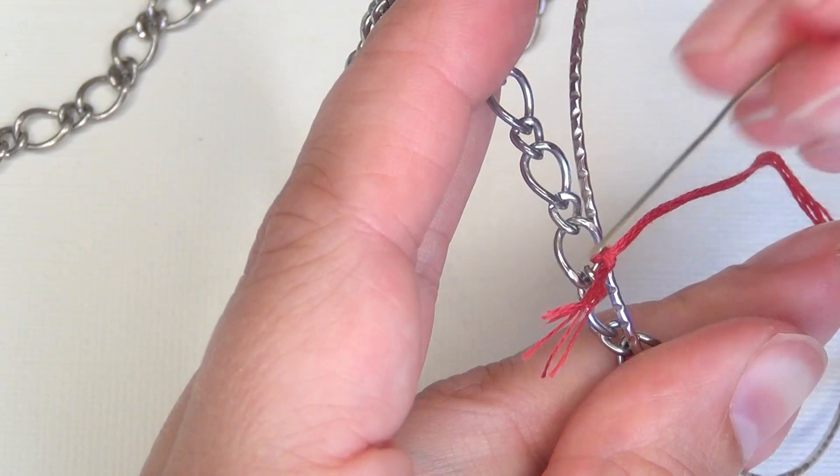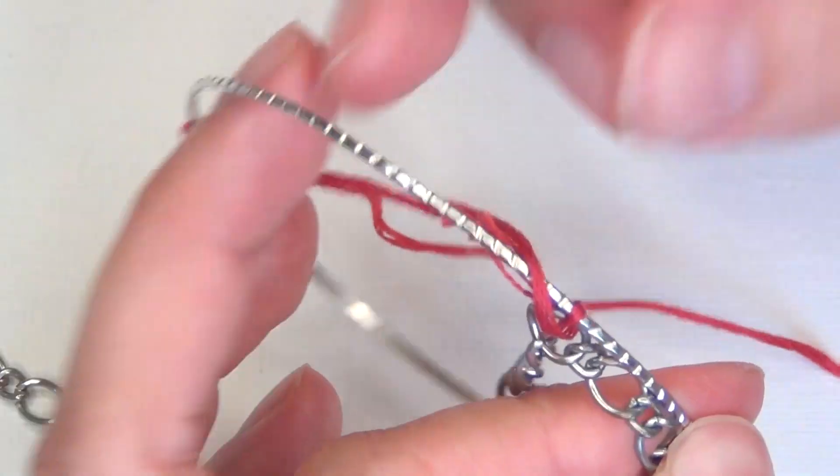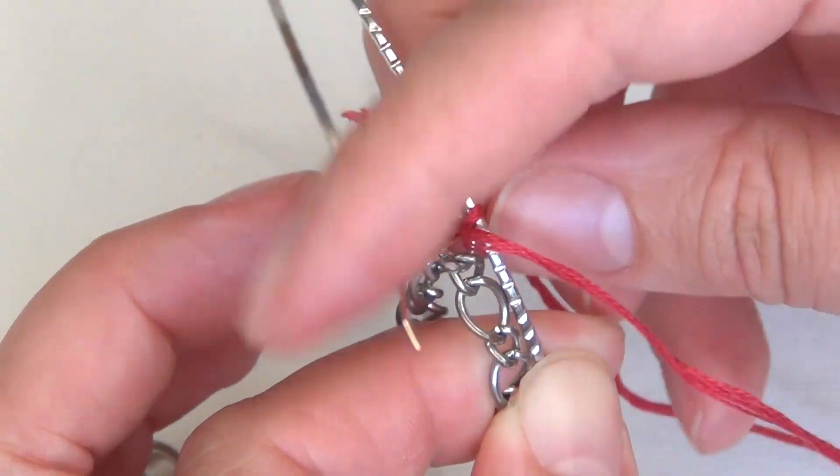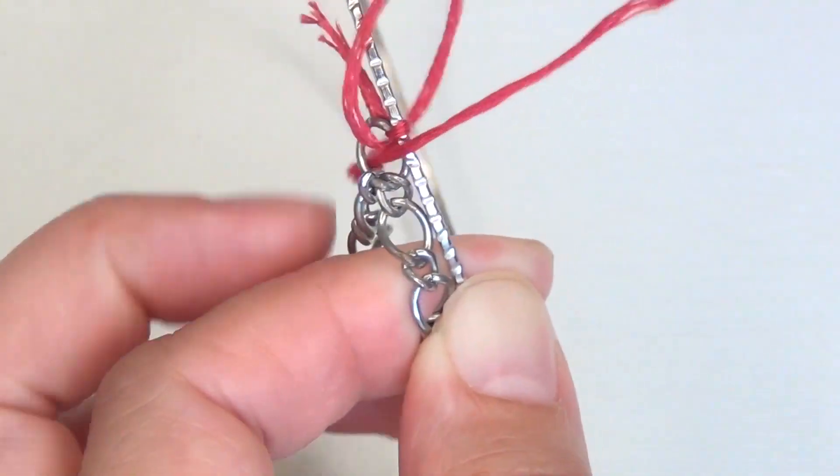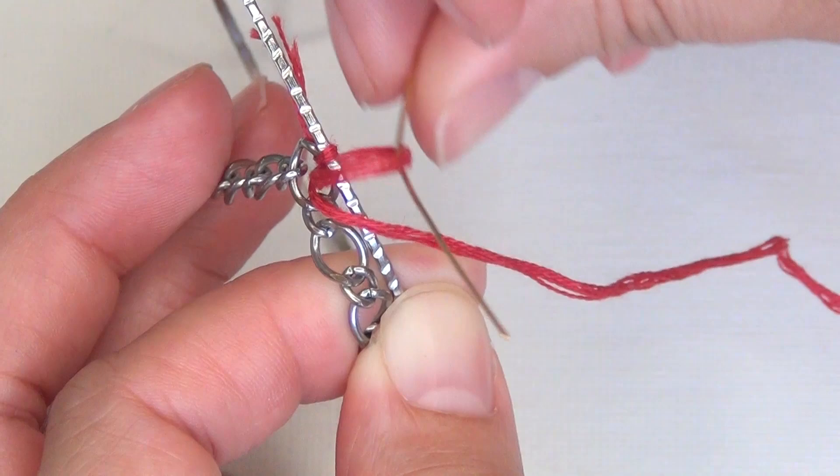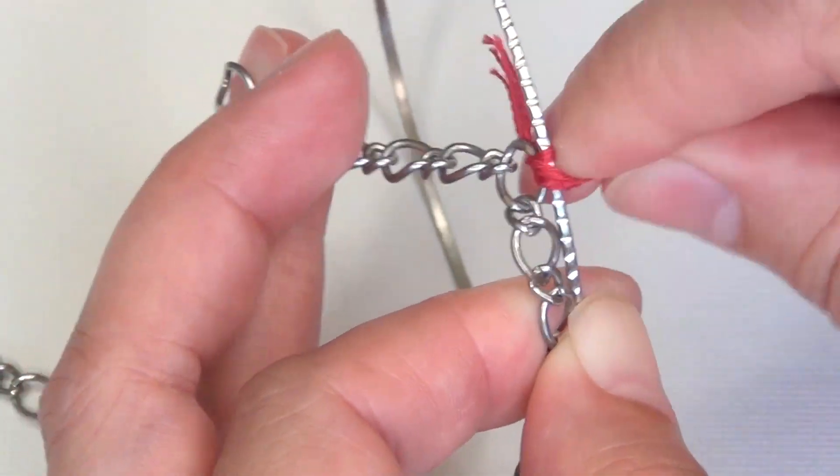Then after you've done that, take the end of your embroidery thread and pass it through that same link and then around the outside of the bangle. Then pass it through the chain link again. Before you pull it all the way tight you'll notice that there is now a loop there. Before you pull it and close up that loop, pass the end of your thread down through the top of the loop and then pull it tight.